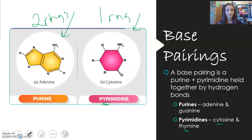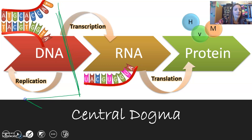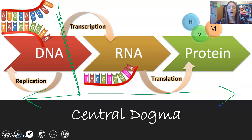Another term that's going to come up a lot in this unit is central dogma — essentially how DNA eventually turns into a protein. This first video is going to focus on just the DNA part, and then we're going to have another set of video notes focusing on how DNA is eventually made into an RNA molecule and then protein.